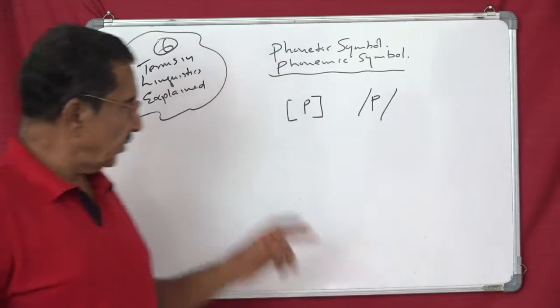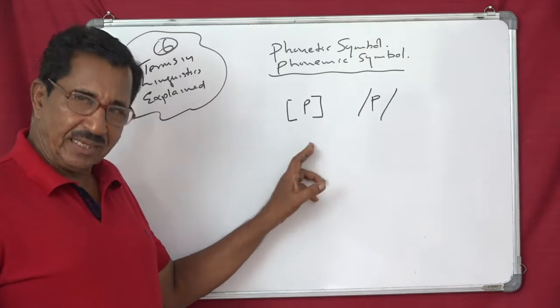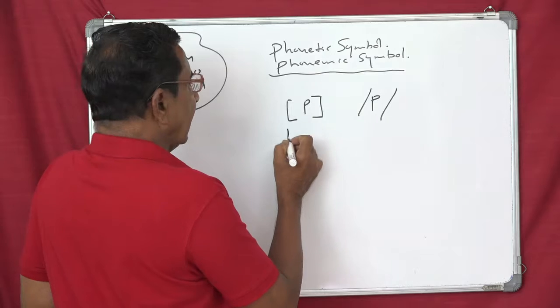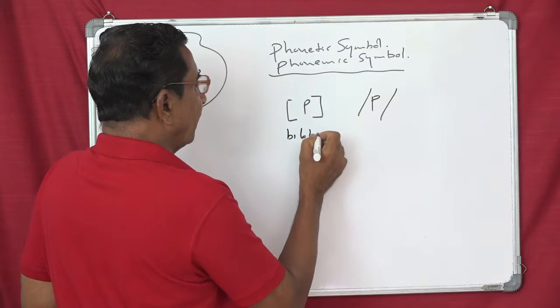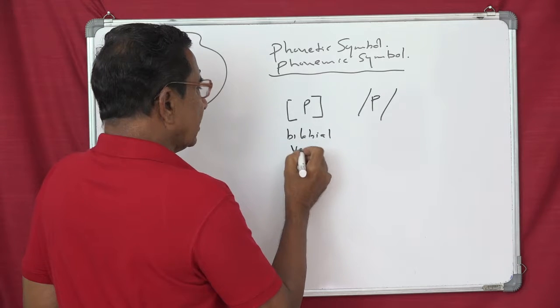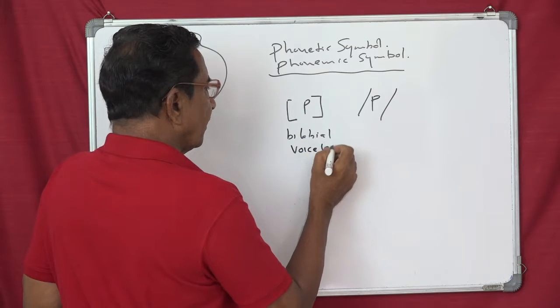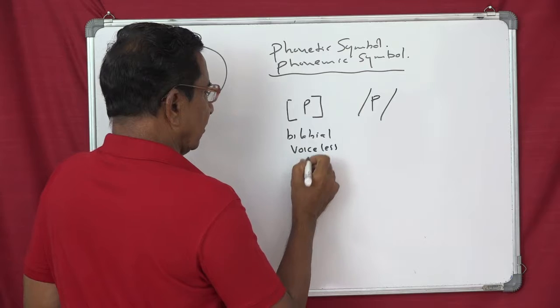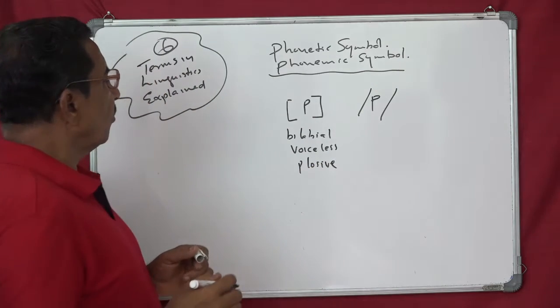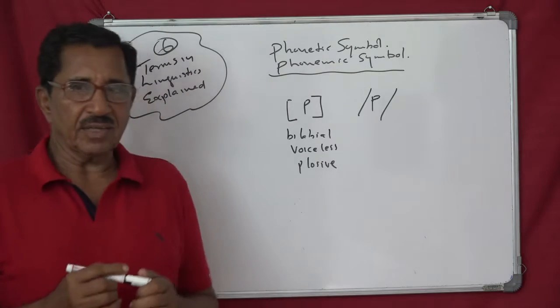Now what is the difference? When you write like this, this means, meaning of this is, it is a bilabial, voiceless plosive. That's all. A bilabial, voiceless plosive. That's the meaning.